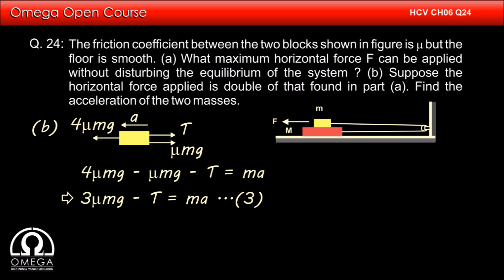If the block on top is moving with acceleration A towards left, the lower block will move with same acceleration towards right. Therefore, T minus mu mg must be equal to M into A.